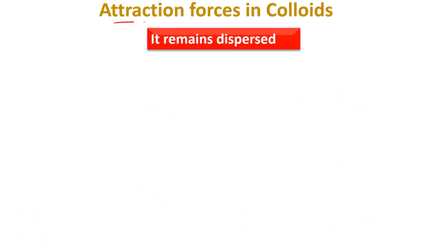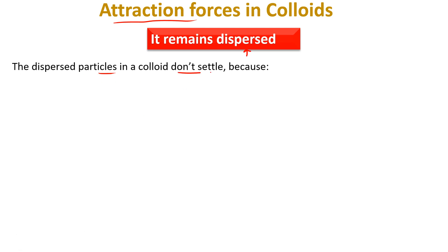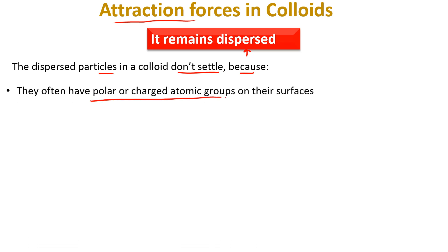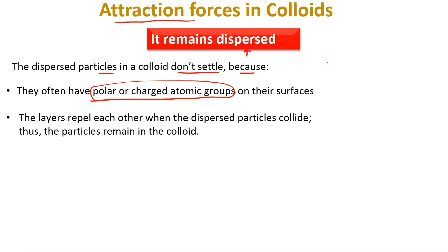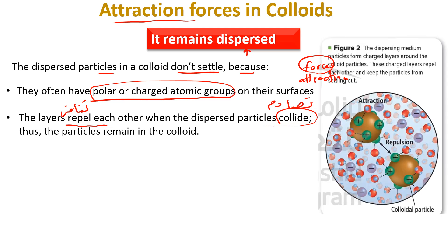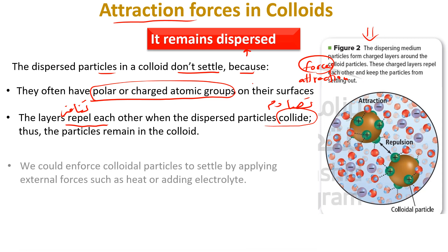There are attraction forces in colloids because the particles remain dispersed and do not settle. The particles have polar or charged atomic groups on their surfaces. This leads to both attraction and repulsion forces. The layers repel each other when dispersed particles collide — so repulsion means تنافر — and because of this attraction and repulsion, collisions occur and the particles never stop moving.